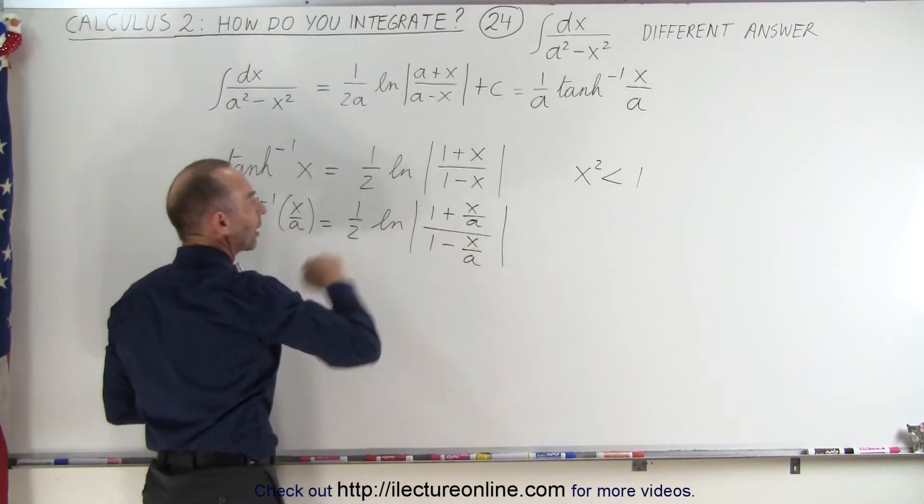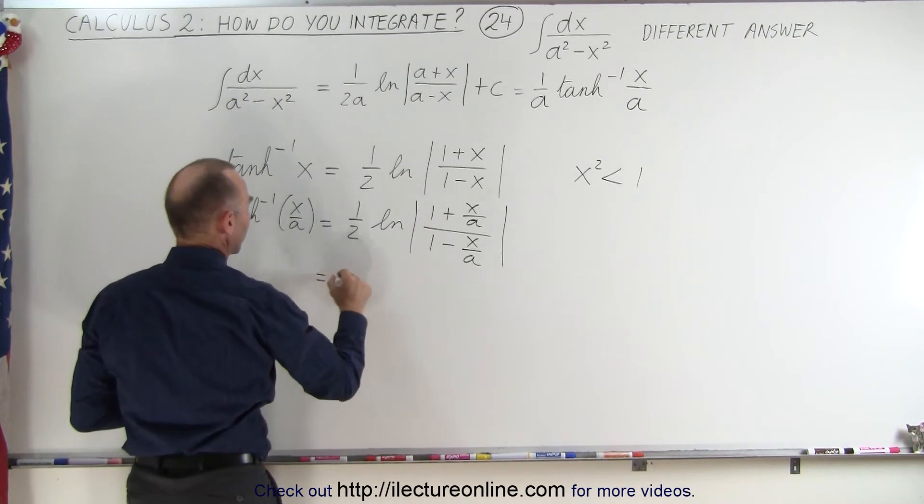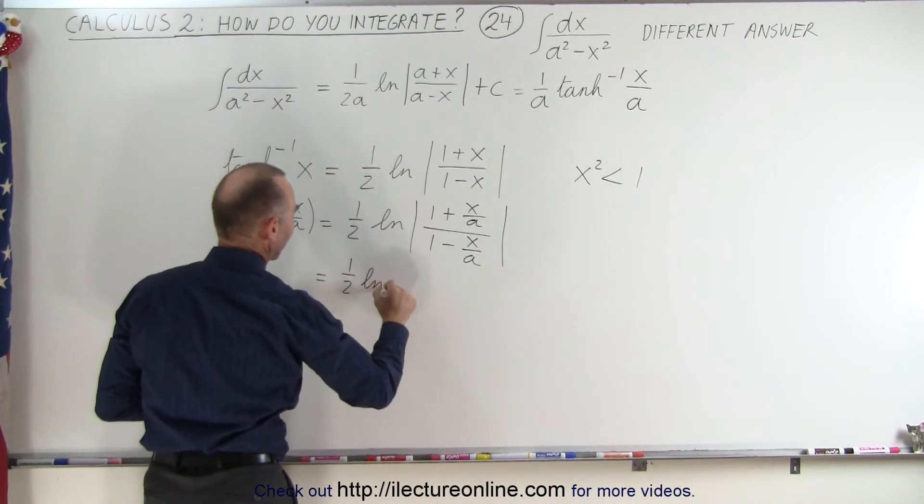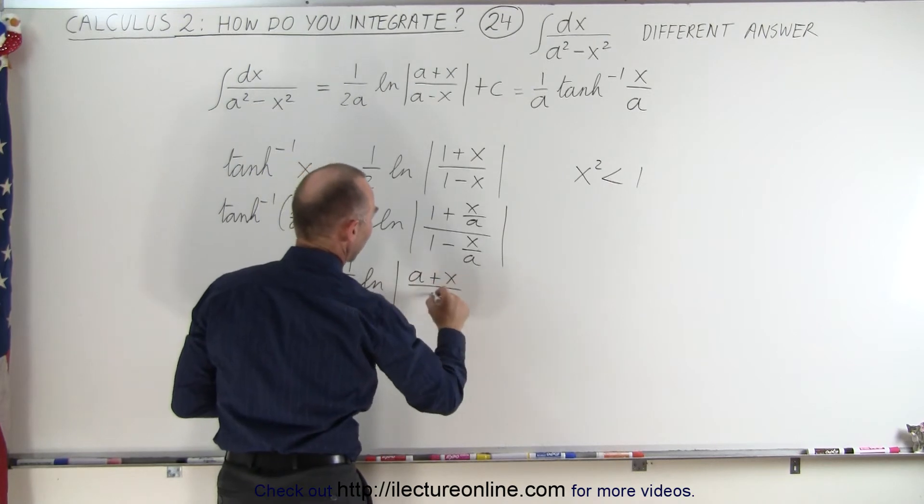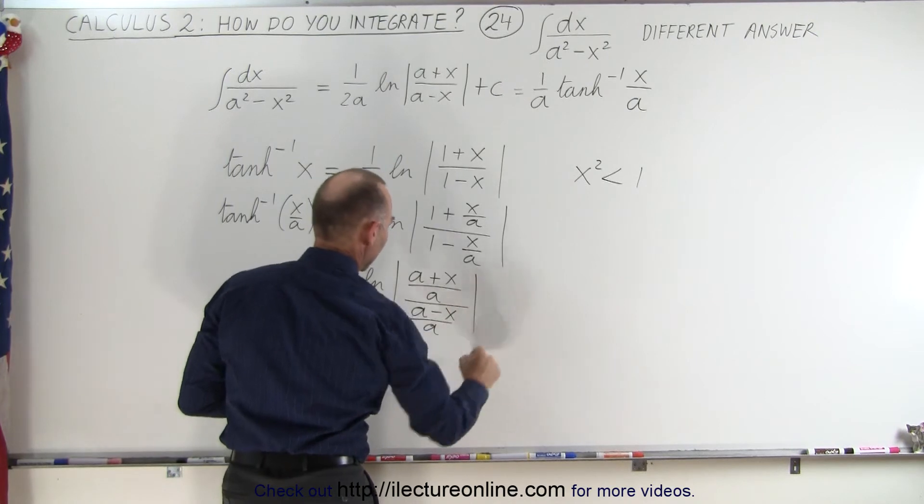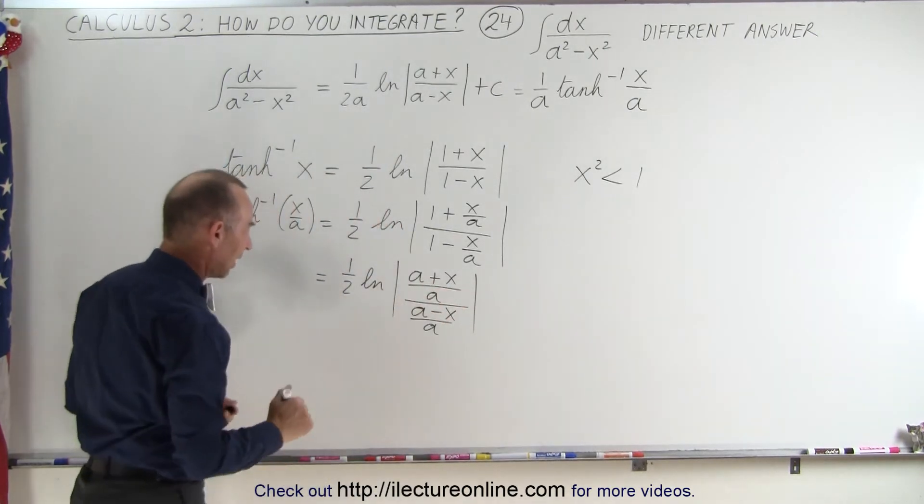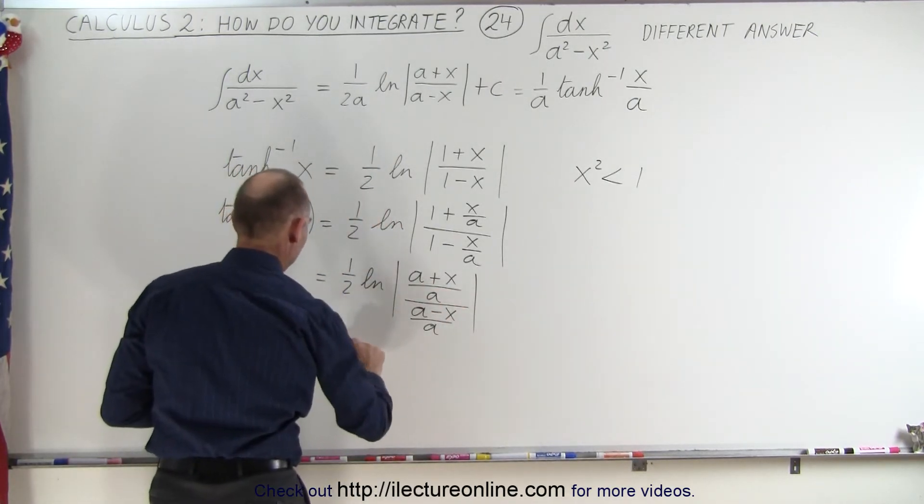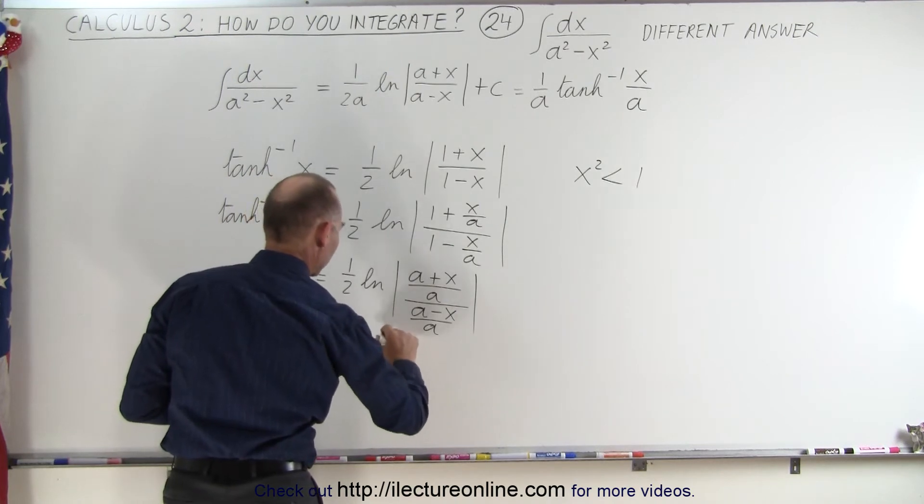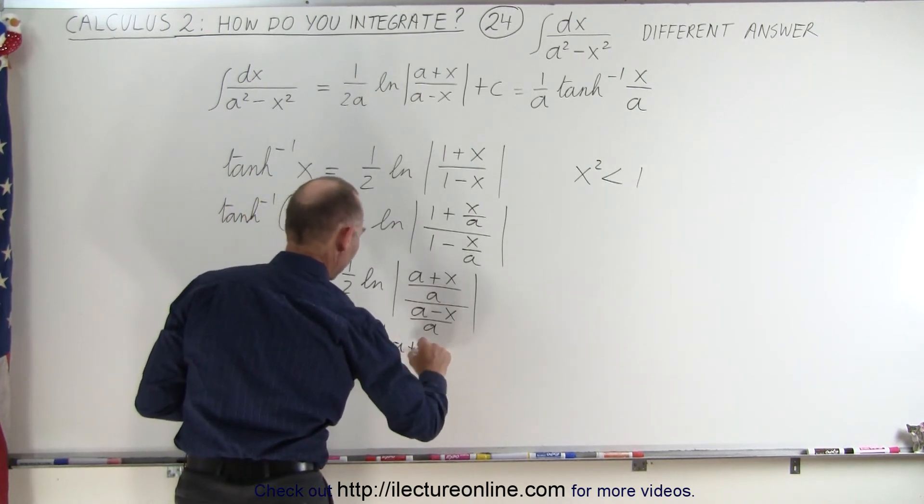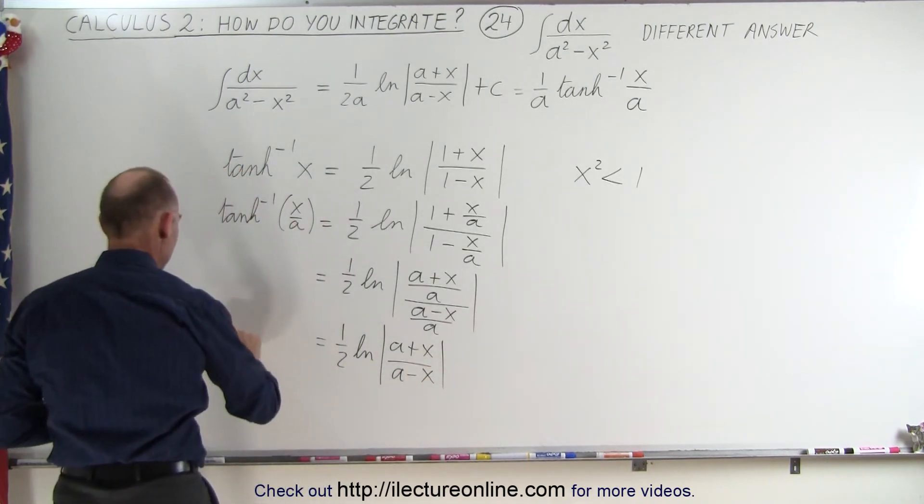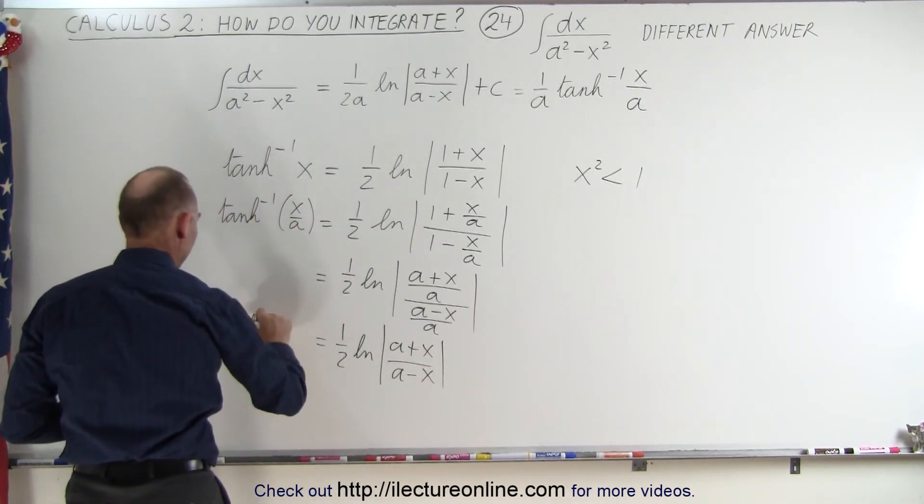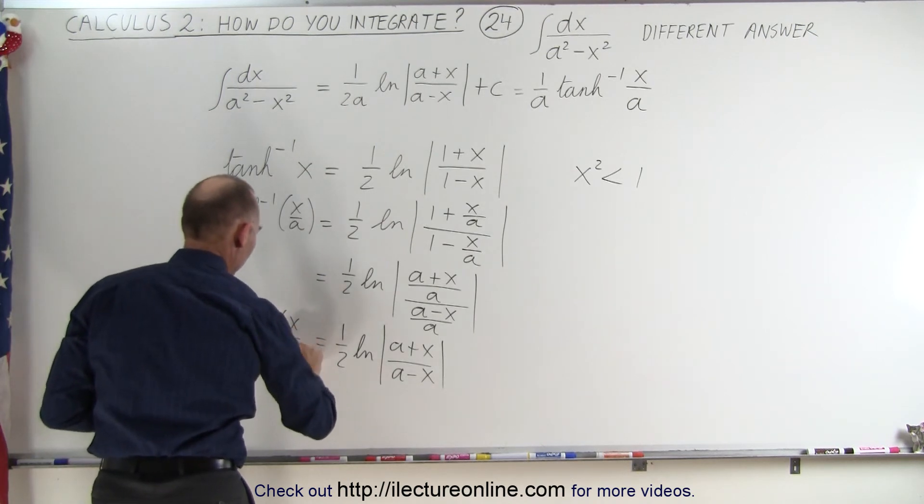And then if we write that over a common denominator, this can be written as one-half times the natural log of a plus x over a divided by a minus x over a. And then you realize that the a's cancel out, so this becomes equal to one-half times the natural log of a plus x over a minus x. Now that would be the inverse hyperbolic tangent of x over a.